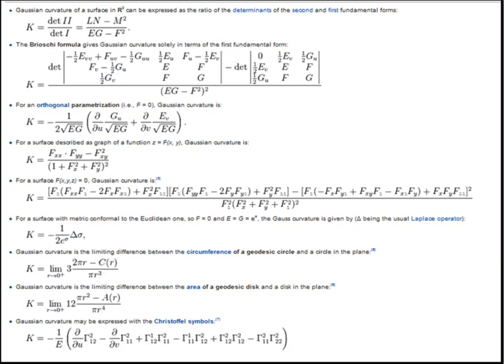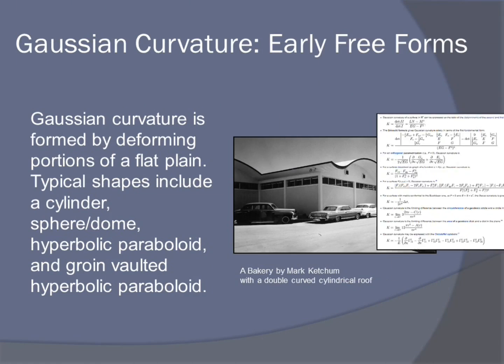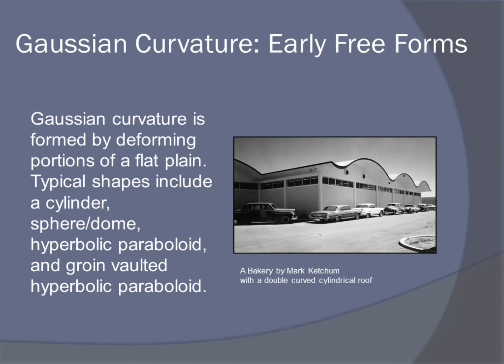What exactly is Gaussian curvature? In layman's terms, Gaussian curvature is formed by deforming portions of a flat plane into different shapes. Shapes include sphere, dome, hyperbolic paraboloid, and groin vaulted hyperbolic paraboloid. I know what these shapes are called — but what does 'deforming a flat plane' actually mean?